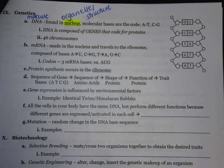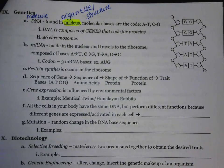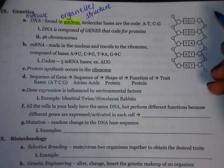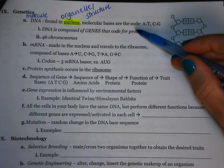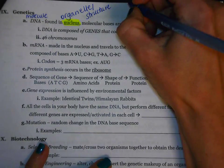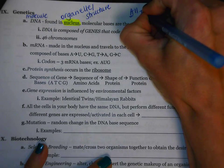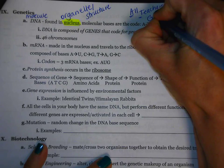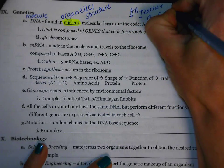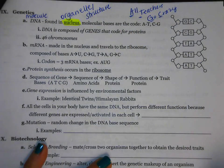DNA itself is made up of molecular bases, and those molecular bases are the genetic code. Those molecular bases are represented by A, T, C, and G. Over here we have those base pairing rules. Remember the phrase: all teachers go crazy. Therefore, A and T are always paired up, and C and G are also always going to be paired up.